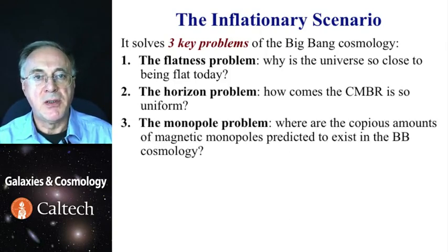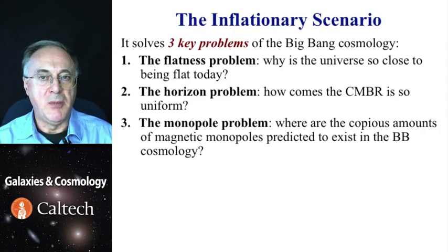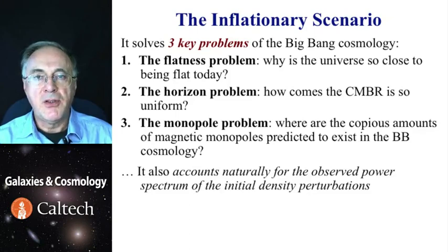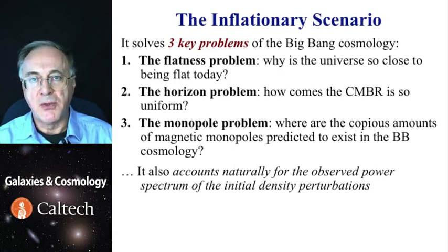The third one is less obvious, and this is why there are no magnetic monopoles observable today, whereas many Big Bang theories predict there should be copious amounts of them created in the early universe. Inflation also accounts for the observed power spectrum of galaxy clustering, and those are ostensibly fluctuations left over from an earlier phase of the universe.